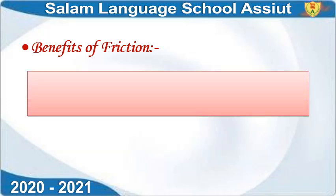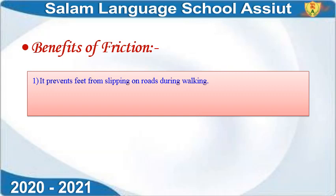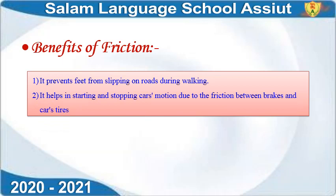What are the benefits of friction? Friction has two benefits. Number one: it prevents feet from slipping on the road during walking. The shoes you're wearing — if the surface is smooth, like tiles or ceramic, you might slip. That's why football players' shoes have small studs on the bottom to prevent slipping while playing or running. Number one: prevent feet from slipping on road during walking.